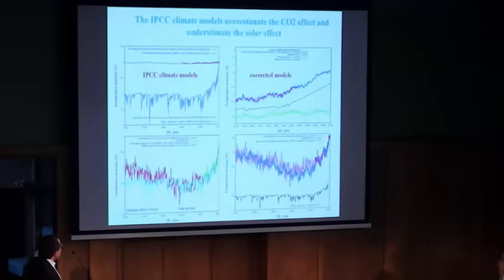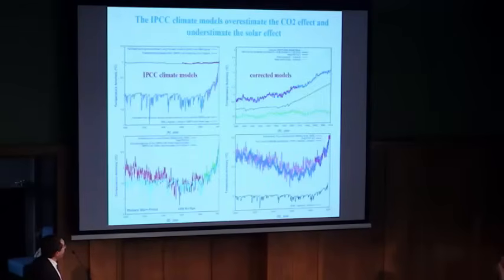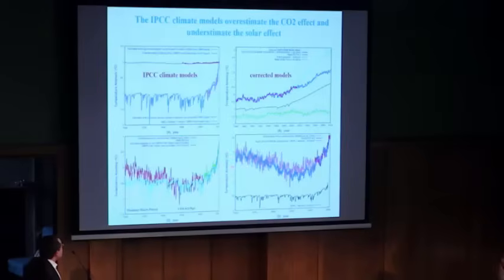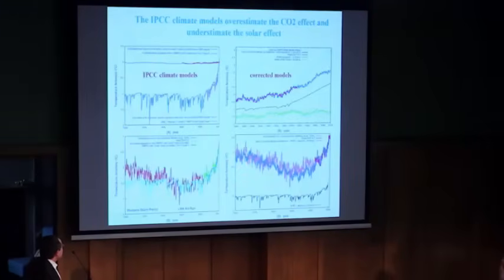If we go back during the last 1,000 years, the models have other problems. We know the temperature during the Middle Ages was like this, then went down, then went up again. The models produce this kind of curve — it apparently reproduces recent warming but does not reproduce the Medieval Warm Period. To get the Medieval Warm Period, it is necessary to increase the solar effect by three, four, five times. So the models are significantly overestimating the greenhouse gas effect and greatly underestimating the solar effect.